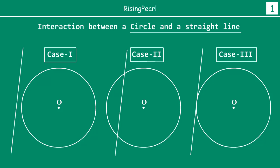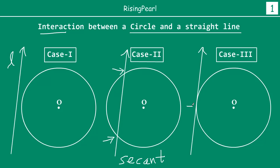In the last webisode, we saw the interaction between a straight line L and a circle. The line L and the circle can have these three relationships. First, the line does not intersect the circle. Second, the line intersects the circle at two different points — over here and over here — and this line is called a secant. And then the third and final scenario where the line touches the circle at precisely one point, and this line is called the tangent to the circle.